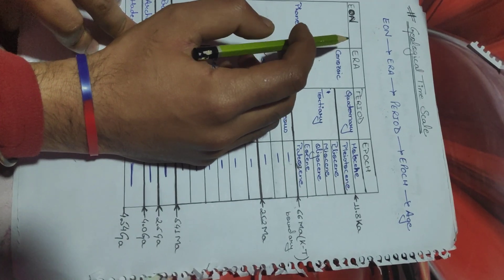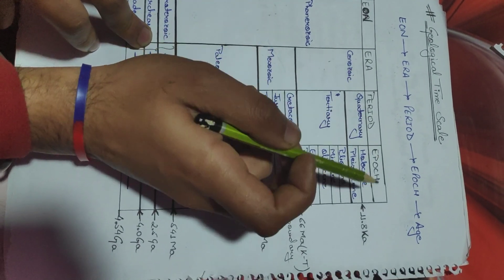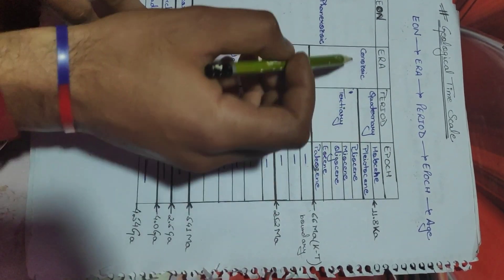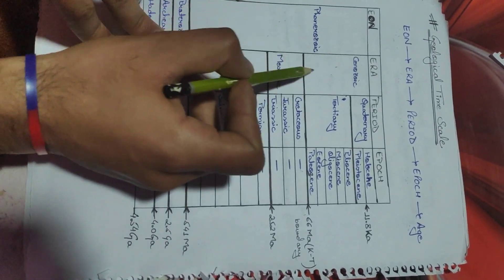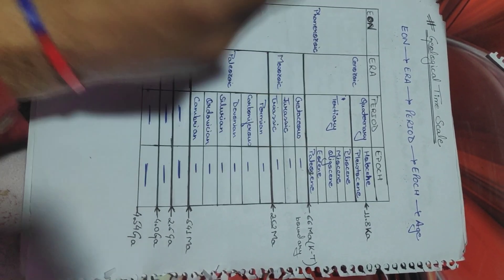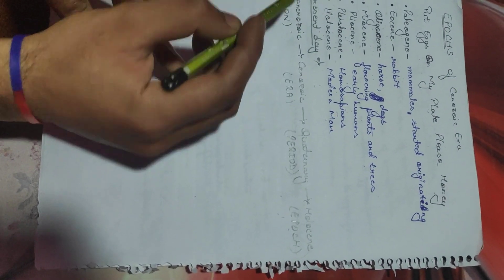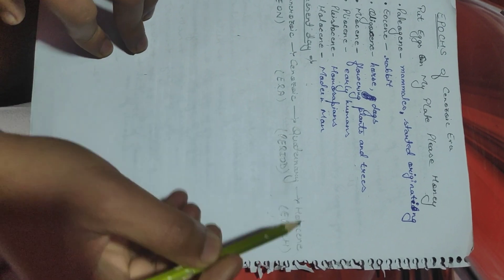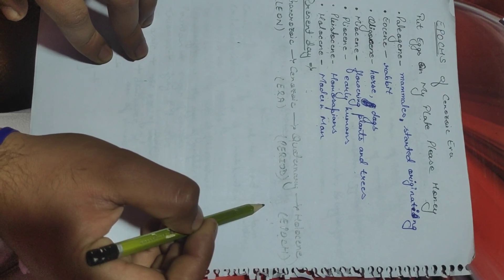We can learn the Era, Period, and Epoch divisions of the geological time scale by just three simple sentences. Our main focus is on the Phanerozoic Eon, which is also the main focus in competitive exams. Currently, we are in the Phanerozoic Eon, Cenozoic Era, Quaternary Period, and Holocene Epoch. Thank you.